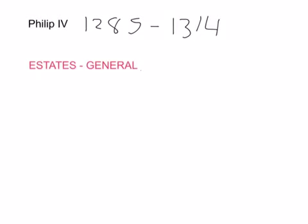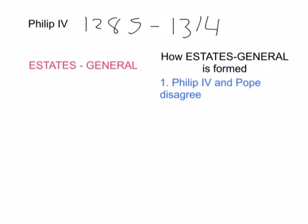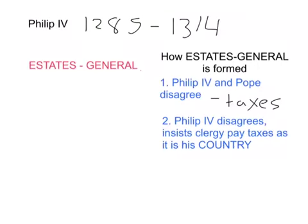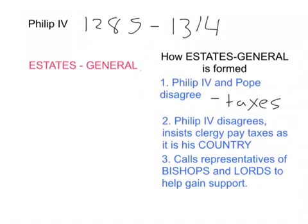Here is the story of how the Estates General came about. Philip IV and the Pope had a disagreement over taxes. The Pope told Philip IV that his priests and clergy did not have to pay taxes to the king because they should only be loyal to the Pope. Philip IV disagreed and insisted the clergy had to pay taxes in his country. In order to gain support for his decision, he called together representatives of his people to agree with him — a similar process to what happened with Edward I in England. The key change Philip IV makes is that he also calls commoners, meaning people from the lower classes, to give him more support.